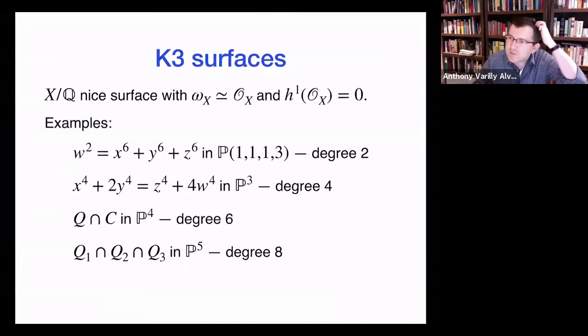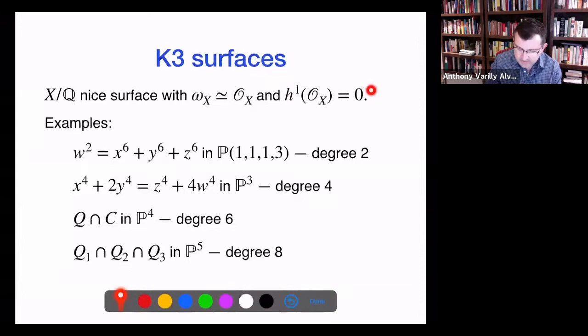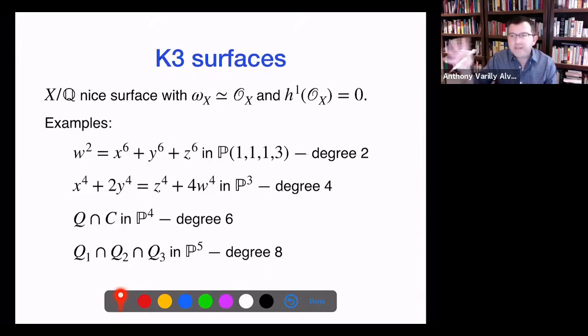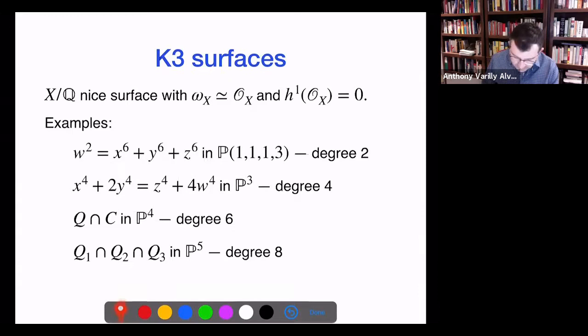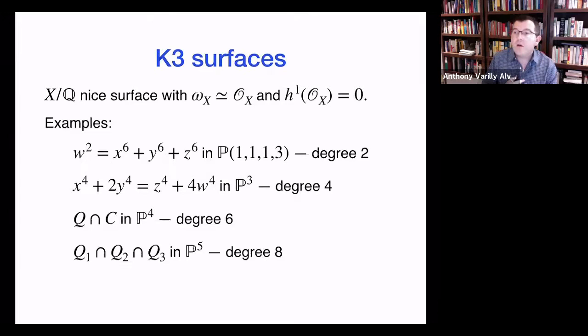As a reminder — K3 surfaces: it's a smooth, projective, geometrically integral surface. It has a couple of properties. One is the irregularity is zero, which is a proxy for telling you that it's simply connected. And the canonical class is trivial, which tells you that there's an everywhere non-vanishing holomorphic two-form.